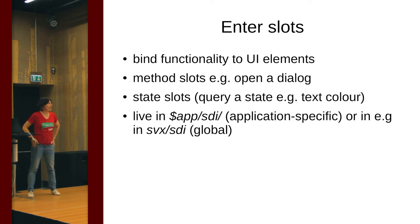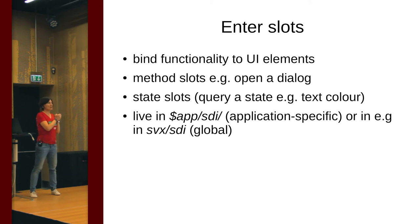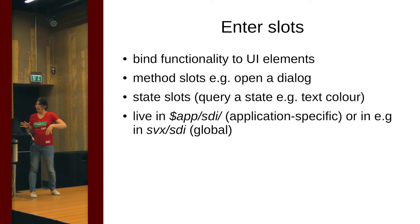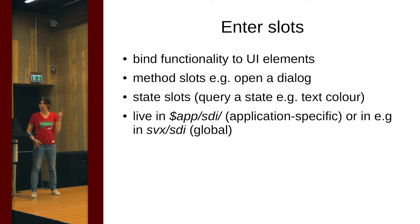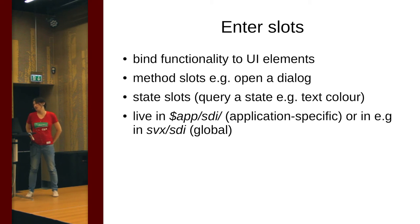For that, we use slots. You can imagine it as a blackboard that connects the UI elements and the UNO commands associated with them to the actual functionality. There are two types of slots: one is a method slot, which for example opens a dialog, and the second is a state slot, which changes the state of an object — for example, changing the color of a line or the size of the font.